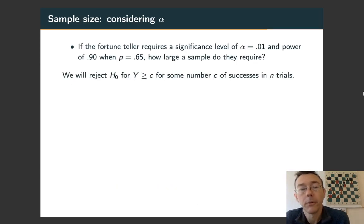Question two. Let's think about sample size. We're specifying a significance level of α = 0.01 and a power level of 0.90 when p = 0.65. In other words, a 90% chance of rejecting the null hypothesis when the person's true probability of guessing the gender of the baby is 65%. How big a sample do we need?